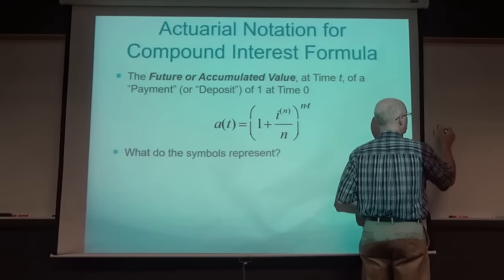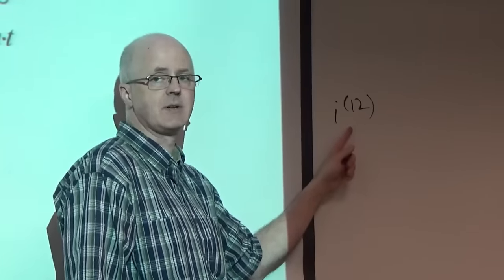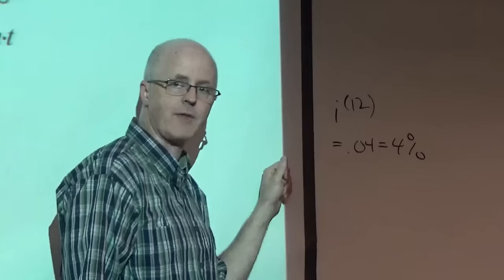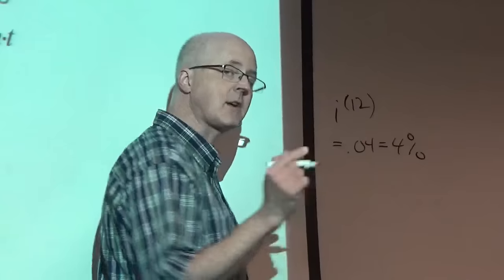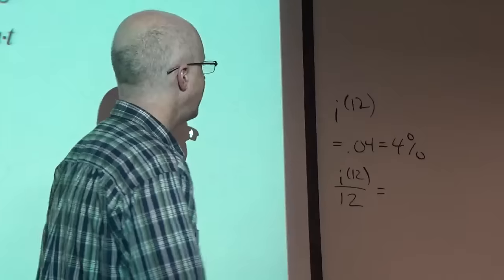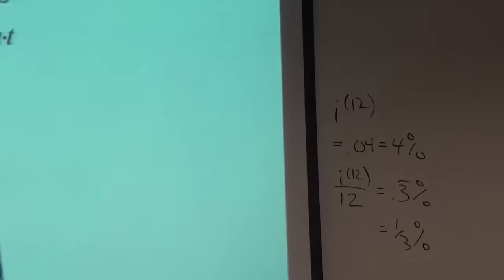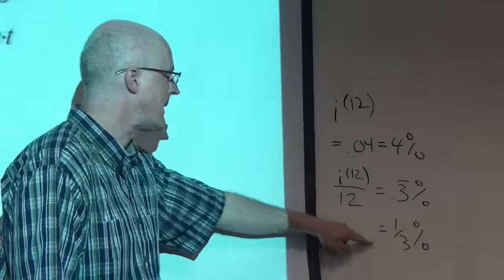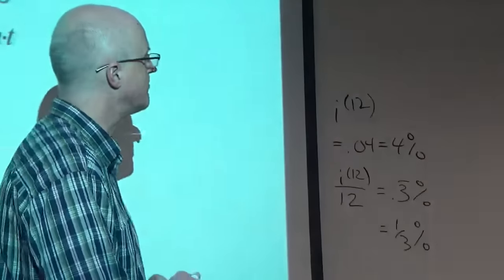For example, if I write i^(12) and it equals 0.04, the N is not a power - I'm not raising i to the 12th power. It indicates a nominal interest rate compounded 12 times per year. At 4%, that means the corresponding monthly interest rate is 0.04/12 = 0.3̄% per month (one-third of a percent per month) - that's how much money grows every month.